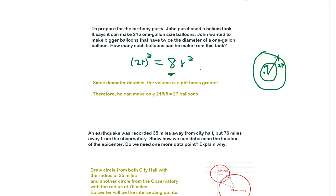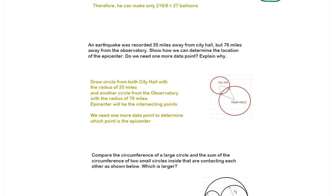Earthquake was recorded 35 miles away from the city hall but 75 miles away from the observatory. Show how we can determine the location. If you assume the epicenter is on the surface, then you draw the circle 35 and 76, and you have to calculate this location. Two possible. In order to determine which side, you need one more. If one more shows this, then that's the epicenter.